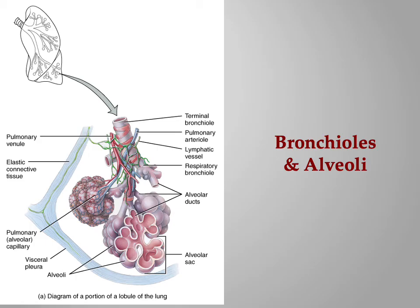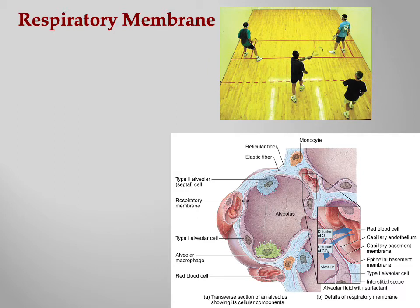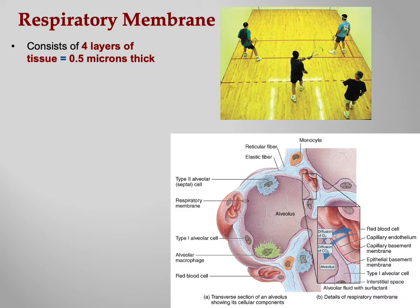The respiratory membrane consists of four layers of tissue and is 0.5 microns thick — microscopic. The lower illustration shows the type 2 alveolar cell (septal cell) secreting surfactant, the alveolar macrophage, and the rest of the membrane made up of type 1 cells.